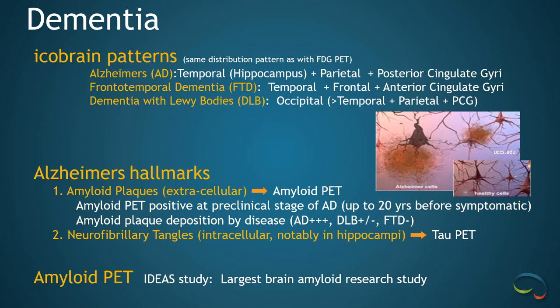Neurofibrillary tangles are intracellular in location and notably in the hippocampi. These can be directly imaged with TAU PET, but at this point in time TAU PET is really just at the research stage. In fact, we're currently a participant in a TAU PET trial at RadNet. Amyloid PET can directly image amyloid plaques, so it's an ideal study to screen for Alzheimer's disease.